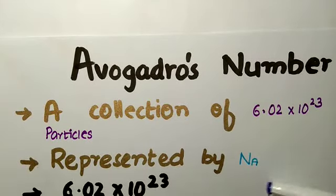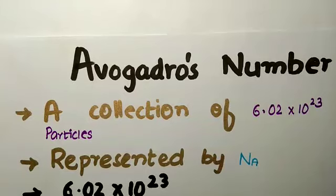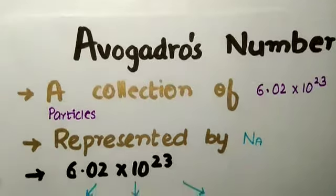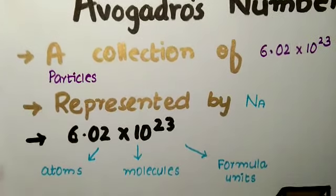Why do we write a small 'a' in Nₐ? Because if we write Na with a small 'a', then what is sodium? Sodium is also Na. The Avogadro number is equal to 6.02 × 10²³.